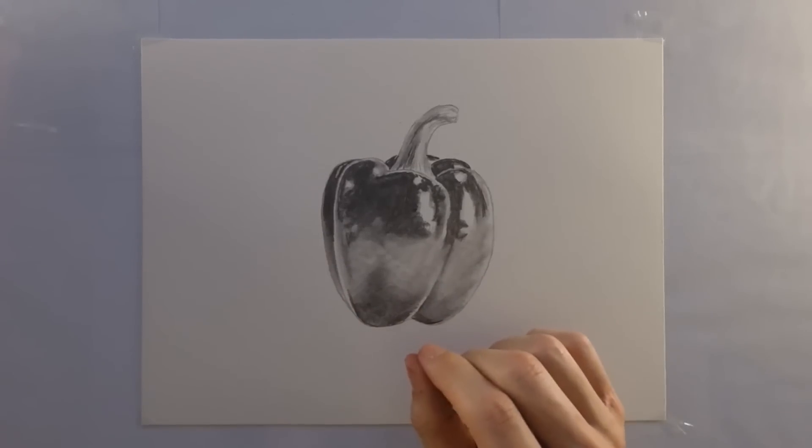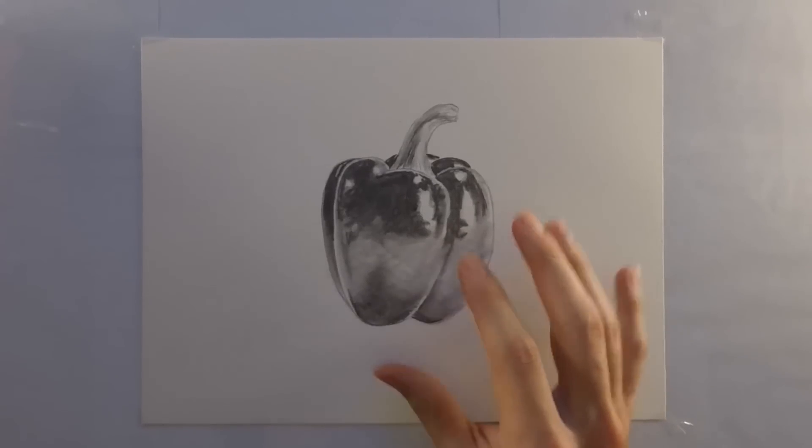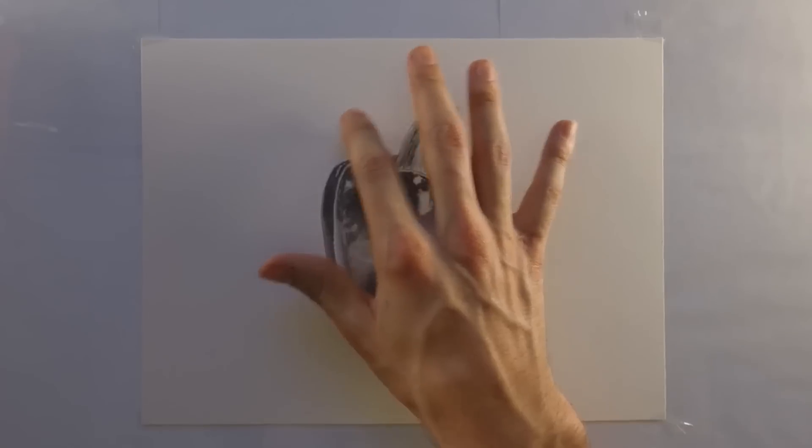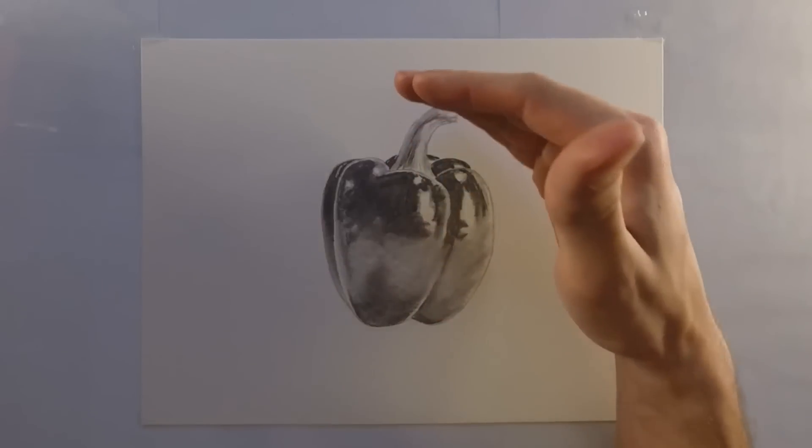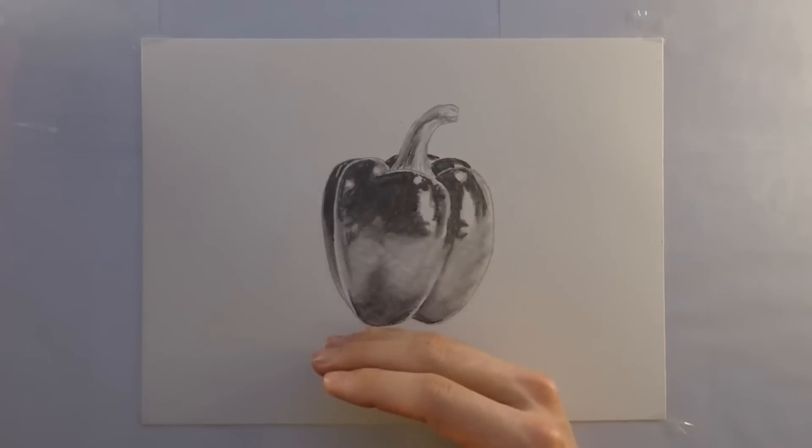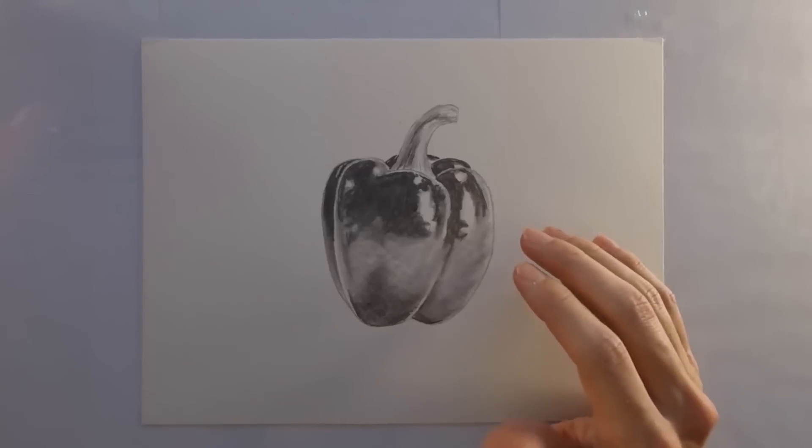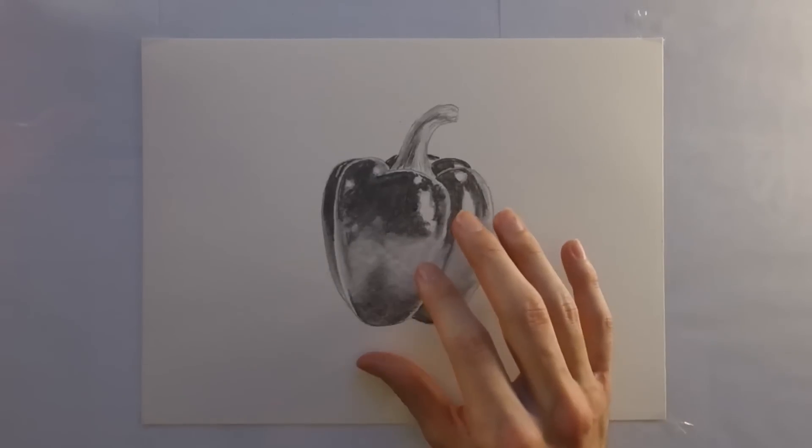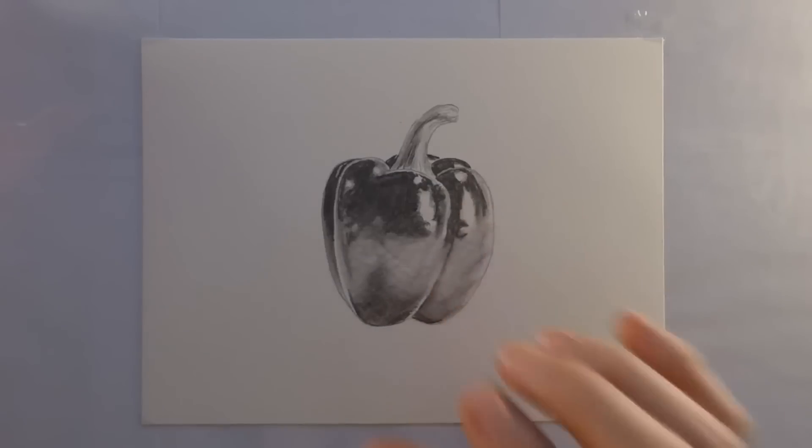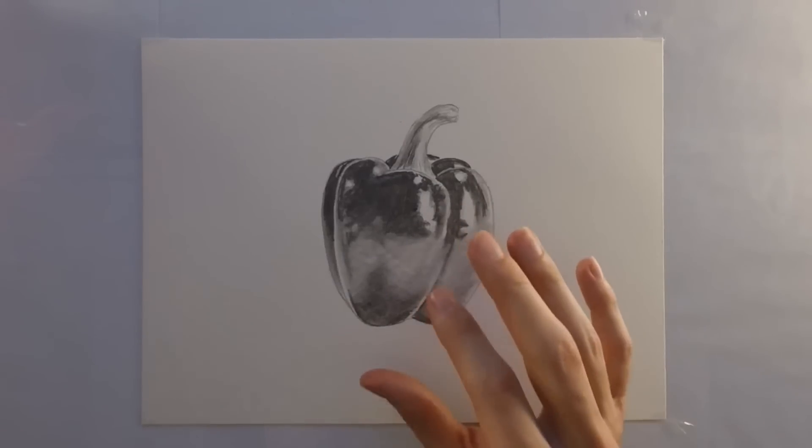The number one mistake that artists make, inexperienced artists, is they lose patience in the middle of a piece of work. And you can see this in your work if you find the spot that you began the drawing with to look really good. And then as you work down and further away from where you started, you see the quality of work beginning to fade. And that is because over time, working on the same piece, an artist will lose patience. So again, patience is the number one way to improve your artwork.